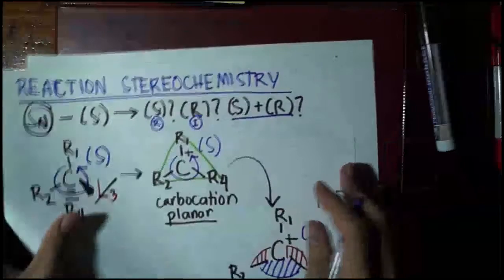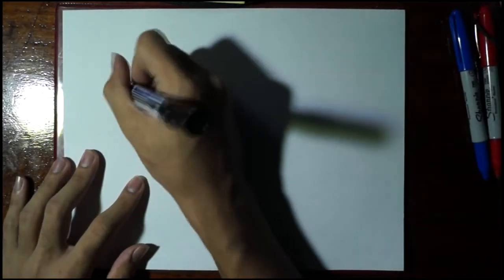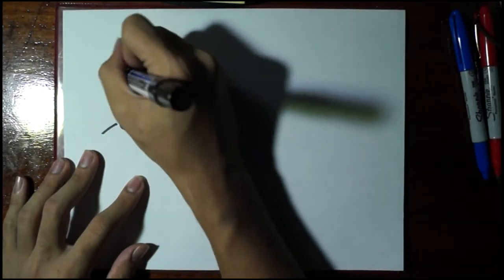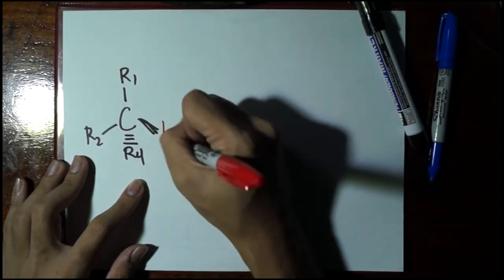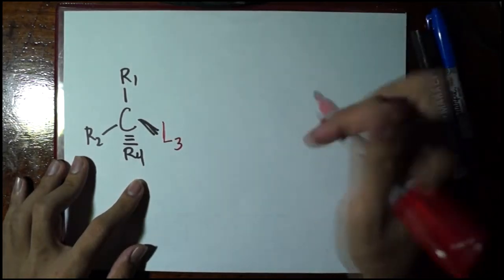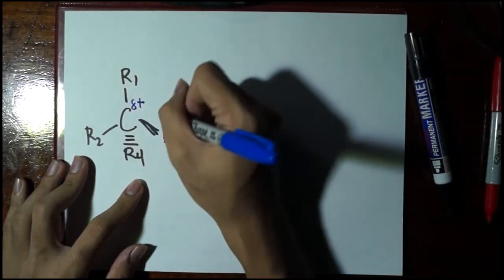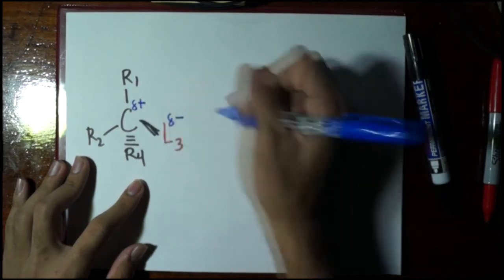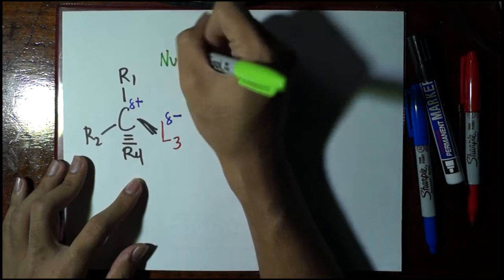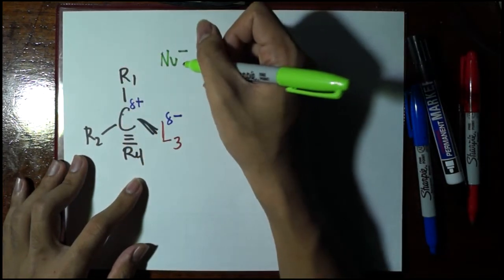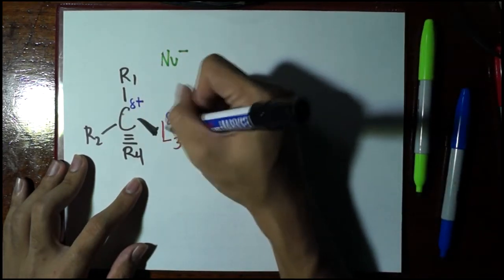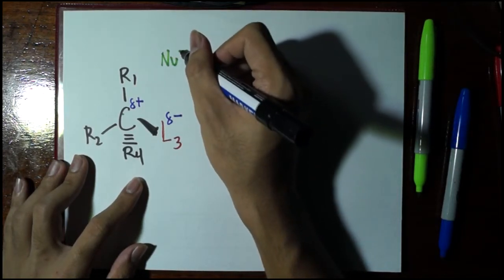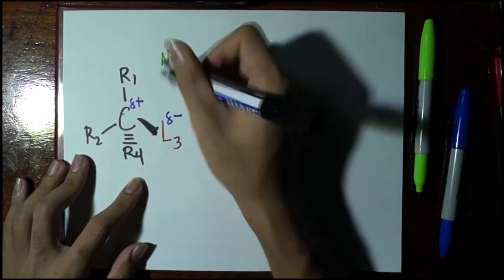Now, what if we are going to talk about SN2? In SN2, recall that here, we have a partial positive charge for this carbon here, the alpha carbon, and a partial negative charge for the leaving group. Now, if nucleophile here attacks the carbon here, do you think nucleophile will go to the part wherein the leaving group is near? Well, the leaving group here is kind of negative. The nucleophile is kind of negative. If nucleophile goes near the leaving group, they will repel because they are of the same charges.